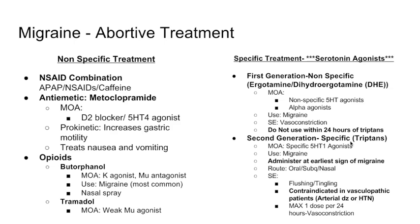Second generation: scientists identified specific serotonin receptors on the meningeal vessels that triptans act on. The example is sumatriptan, which is the most common one. All the medications in this class end in 'triptan.' These are used for migraines, and patient education is to administer them at the earliest sign of a migraine to allow them to work.